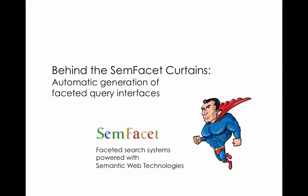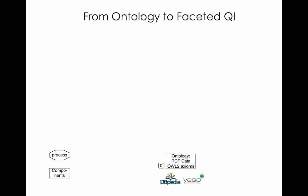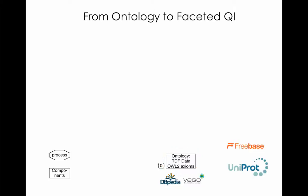We saw how users can construct complex conjunctive queries by making choices in the SamFacet query interface. Next, we will explain how this query interface is automatically generated from the input ontology. For the explanation, we will use a workflow diagram describing interface generation that consists of processes denoted with diamonds and components denoted with boxes. The input of the whole process is an ontology composed of RDF data triples and OWL2 axioms. In our installation example, the input is a fragment of DBpedia and Yago. But it could be any RDF or OWL2 ontology — for example, Freebase or UniProt.